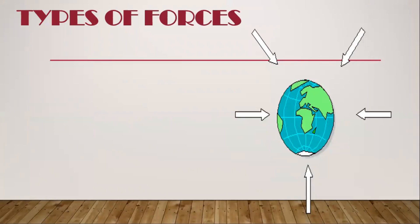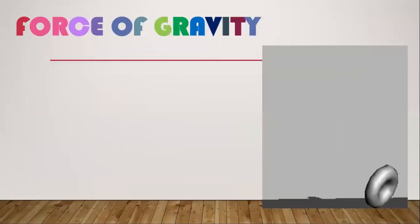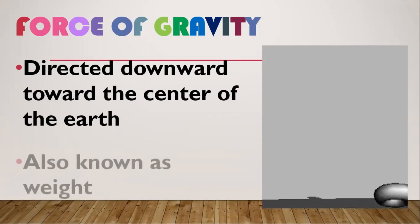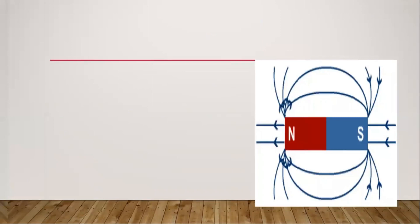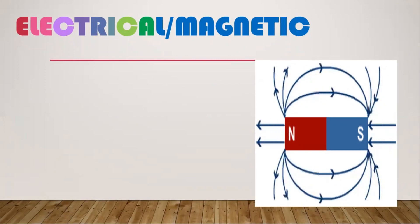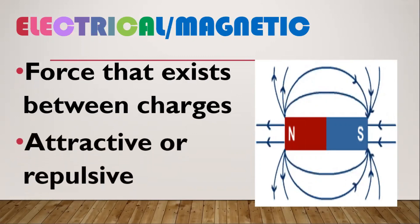The other type of force is the non-contact force — forces that do not require physical contact, though they are acting even if you cannot see them. First is gravity, which always pulls objects toward the center of the Earth. Another non-contact force is the electromagnetic force — combining electrical and magnetic forces. The force that exists between electric charges is called electrical force, and if it is attractive or repulsive, that is magnetic force.